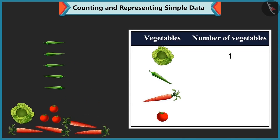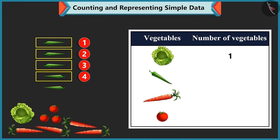There is 1, 2, 3, 4 and 5 green chillies. So, we write 5 against green chilli.